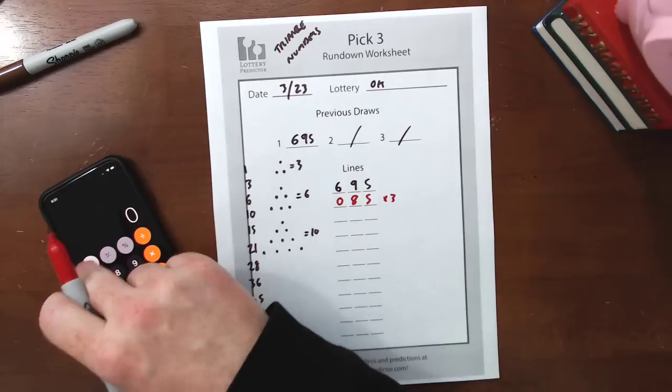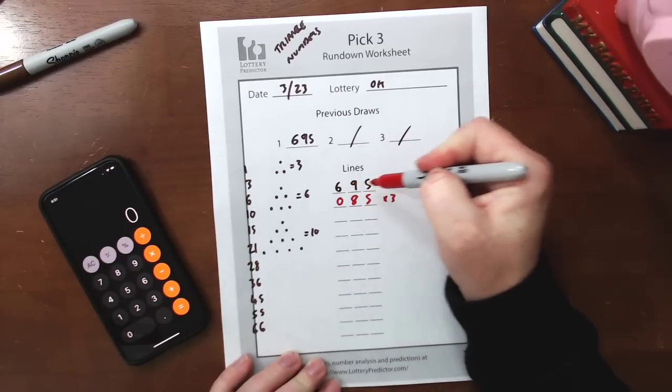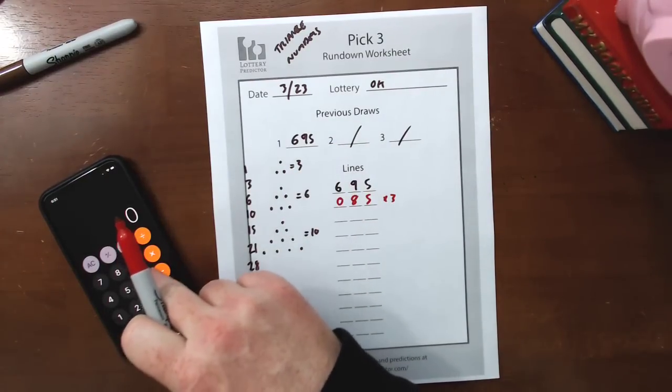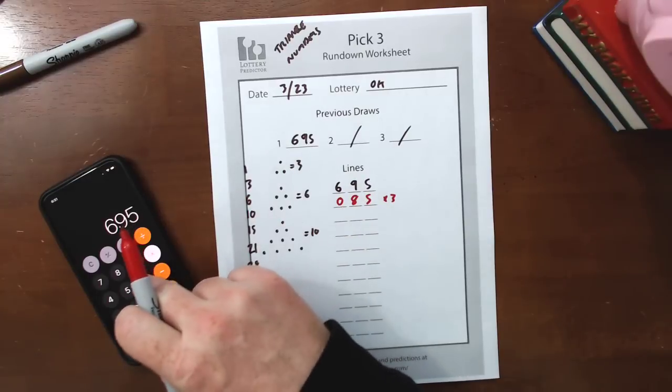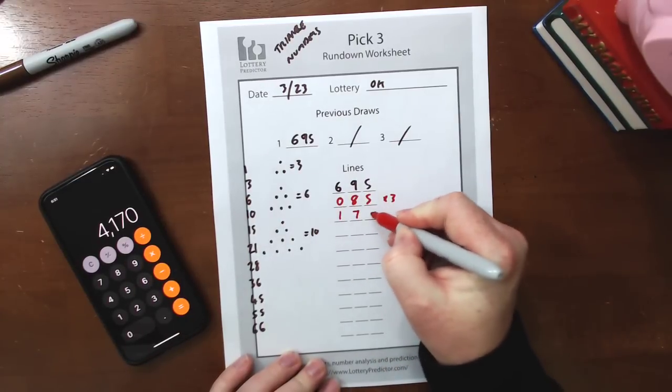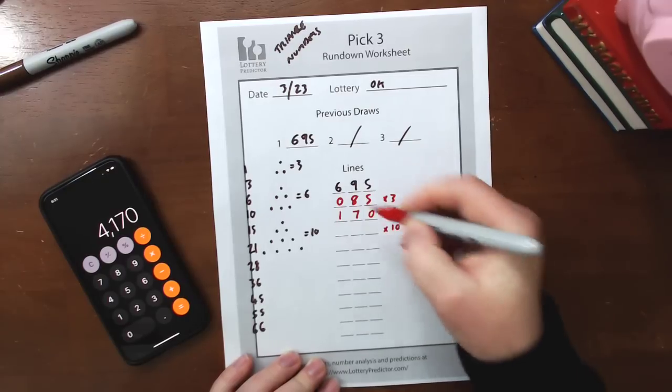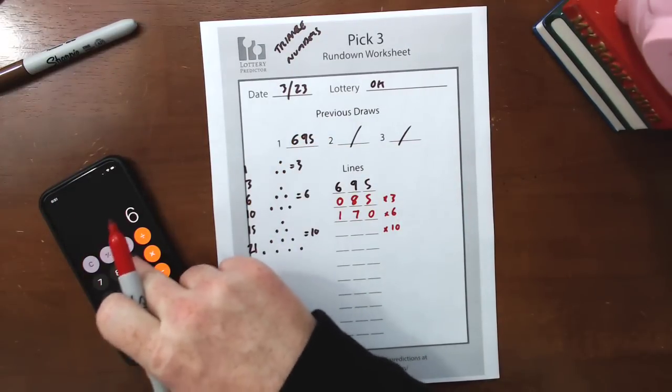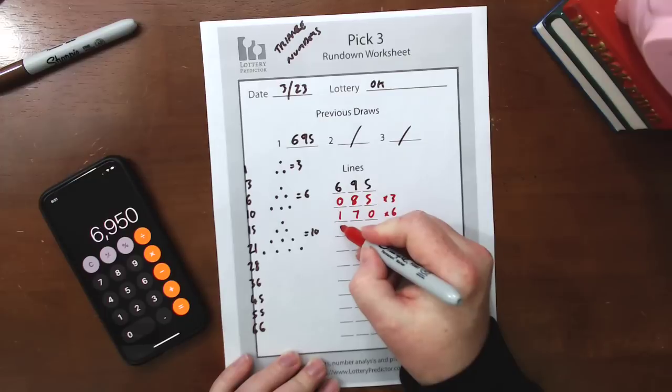Then you're going to clear out the calculator again. This is not an incremental multiplication. We're going to keep multiplying 695 by our triangle numbers. So we take 695, multiply it by our next triangle number, which is 6, and that will give us 170. The next one is 10. So we'll take 695, multiply it by 10, and that gives us 950.